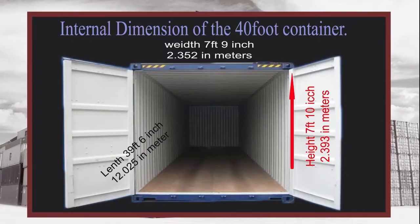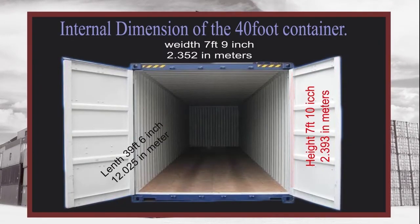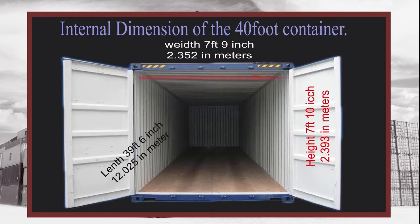Internal dimensions of the 40 foot dry van container: height 7 foot and 10 inches, 2.393 meters; width 7 foot 9 inches, 2.352 meters; length 39 foot 6 inches, 12.025 meters.